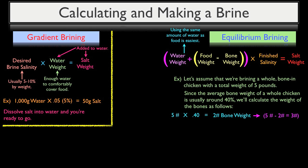Now, since it's easiest to use the same amount of water when calculating an equilibrium brine, we're going to take 3 pounds of water and add it to our 3 pounds of chicken meat for a total of 6 pounds. I'm going to decide that I want my protein to contain 1% in salt when the brining process is finished.